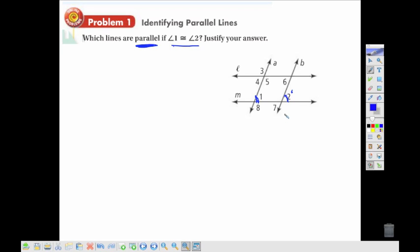Now that we have those two angles marked, we look at the lines we're dealing with here. We're dealing with lines A and B with a transversal M. We then look to see which special pair those are, and those are corresponding angles. Since those corresponding angles are congruent, our postulate says if corresponding angles are congruent, then the lines are parallel.